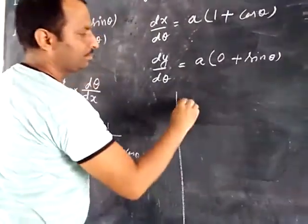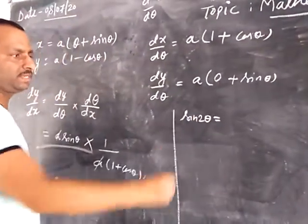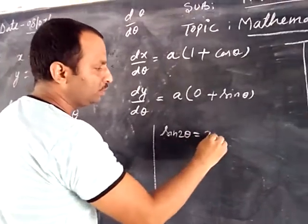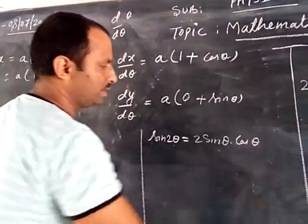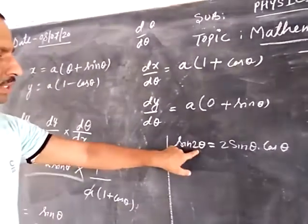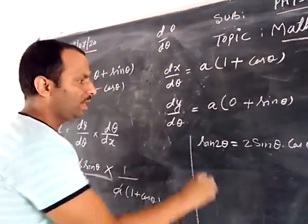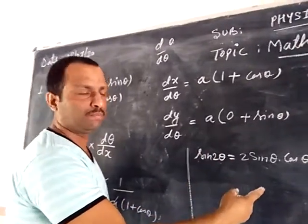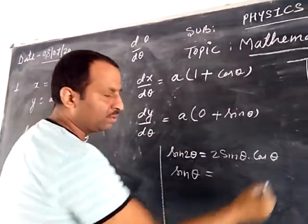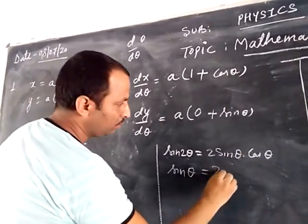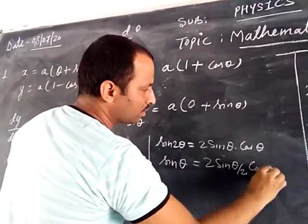Okay, look here. Now we need to simplify using the identity sin 2theta is equal to 2 sin theta cos theta. So sin 2theta becomes 2 sin theta cos theta.